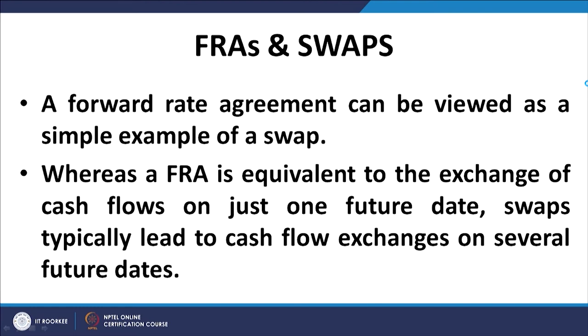This is the interrelationship between them: a forward contract and a forward rate agreement are basically one-time exchanges of cash flows at a point in time — say 3 months, 6 months, or 1 year from today. Swaps have a sequence of cash flows exchanged at certain, usually equal, periods of time. So swaps consist of a number of FRAs bundled together — it is a bundle of forward rate agreements. What forward rate agreements are, we will talk about in the next lecture.